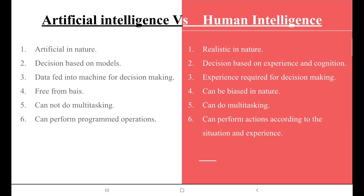Here comes the difference between Artificial Intelligence and Human Intelligence. Artificial Intelligence is artificial in nature — decisions are based on models, data is fed into machines for decision making, it is free from bias, cannot do multitasking, and can only perform programmed actions. But Human Intelligence is realistic in nature — decisions are based on experience and cognition, experience is required for decision making, can be biased, can do multitasking, and can perform actions according to the situation and experiences.